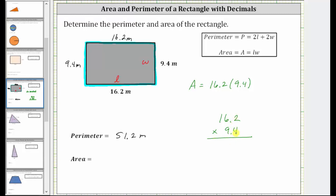We begin by multiplying by the 4. 4 times 2 is 8. 4 times 6 is 24. Record the 4 and perform an exchange with the 2. 4 times 1 is 4 plus 2 is 6.